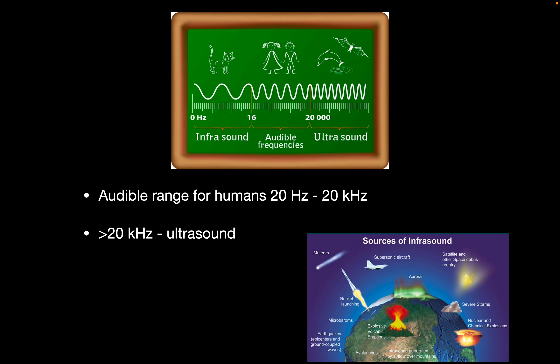Based on frequency, sound is divided into ranges. The human audible range is between 20 Hz and 20 kHz. Below 20 Hz is infrasound — very low rumbling sounds like volcanic eruptions or earthquakes, which some animals can hear but humans generally cannot. Above 20 kHz is ultrasound, and medical ultrasound operates in the megahertz range.